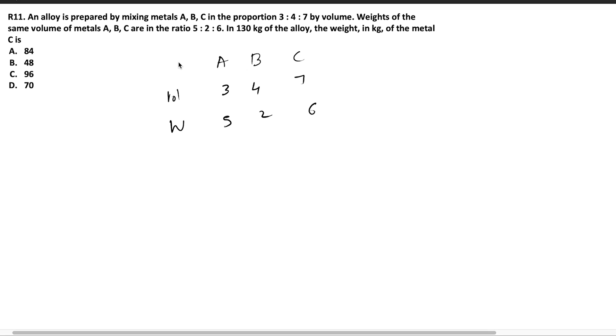An alloy is prepared by mixing metals A, B, C in the proportion 3 is to 4 is to 7 by volume. Weight of the same volume of metals A, B, C are in the ratio 5 is to 2 is to 6. It says that same volume of metals, which means I can take it as 1 liter, 1 meter cube or 1 centimeter cube, it doesn't matter. And the weight will be in the proportion 5 is to 2 is to 6. Whatever the volume I take, it should be same for all of these metals and the weight will have the ratio of 5 is to 2 is to 6.